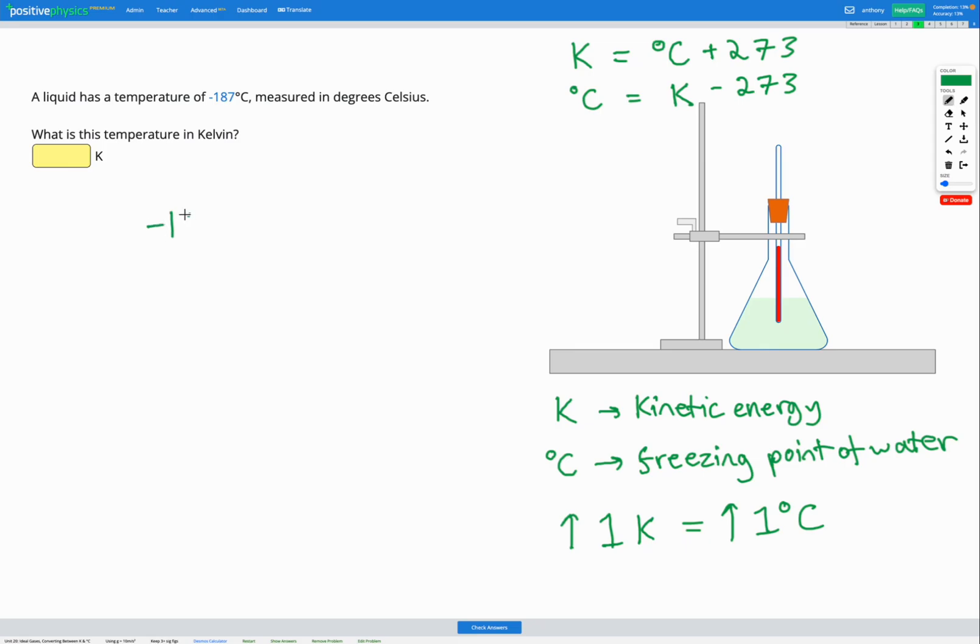So we're starting with negative 187 degrees C. We know that to get into Kelvin from degrees C, we have to add 273. So if we do negative 187 plus 273, that's going to get us 86 Kelvin as our temperature.